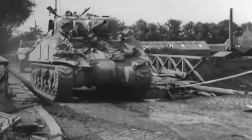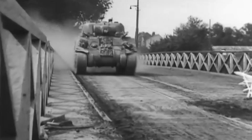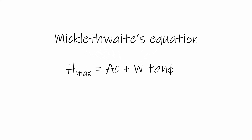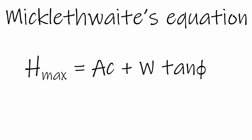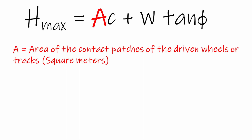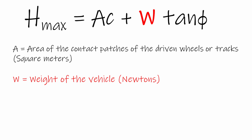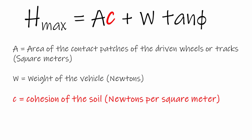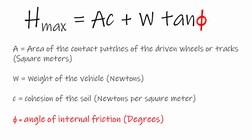During the Second World War, a researcher working at the Chertsey Military Research Centre in the UK called E.W.E. Micklethwaite developed an equation to predict the maximum amount of traction that a vehicle could produce on any particular soil, which he called H max. The equation he produced had four important elements: two vehicle parameters — the total contact patch size of the driven tyres or tracks, and the weight of the vehicle — and two soil parameters — the soil cohesion and the angle of internal friction.